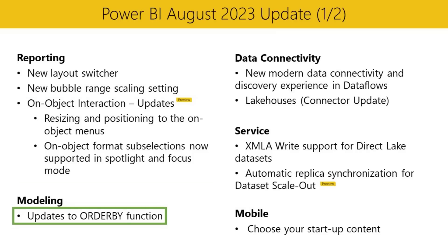Moving on to modeling, we've got an update to the ORDER BY function. When there are blanks in the data, you can now specify where to order them by adding blanks last or blanks first. Valid values include: blanks default — the default value, where numerical blank values are ordered between 0 and negative values, and string blank values are ordered before all strings including empty strings; blanks first — blanks are always ordered at the beginning regardless of sort direction; and blanks last — blanks are always ordered at the end regardless of sort direction.